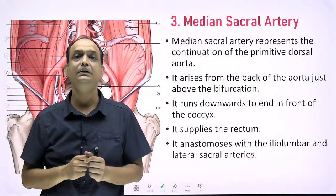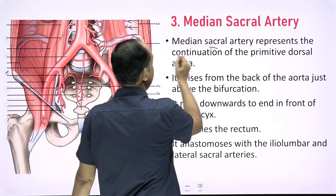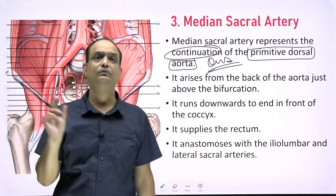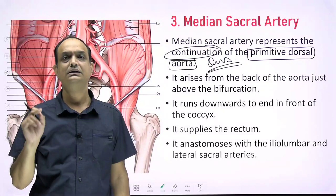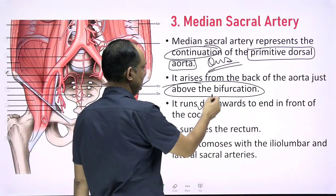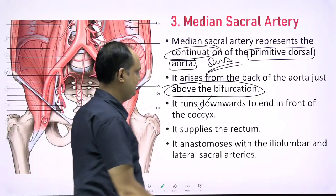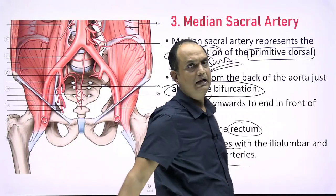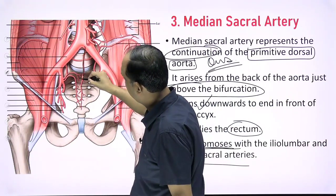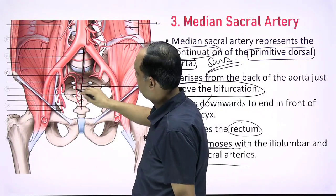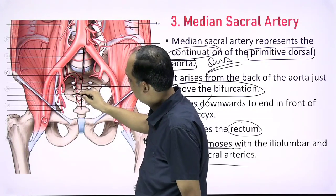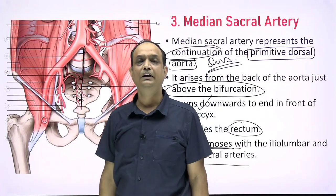The median sacral artery represents the continuation of the primitive dorsal aorta — a very commonly asked exam question. It arises just above the bifurcation from the posterior side of the aorta and runs downward into the pelvis in front of the sacrum and coccyx, supplying the rectum. It anastomoses with branches of the iliolumbar artery and lateral sacral arteries, which are branches of the internal iliac artery.